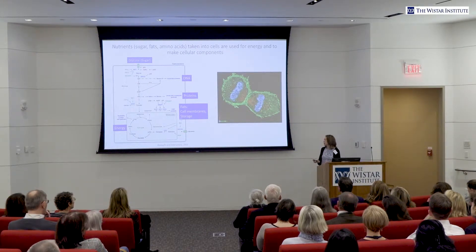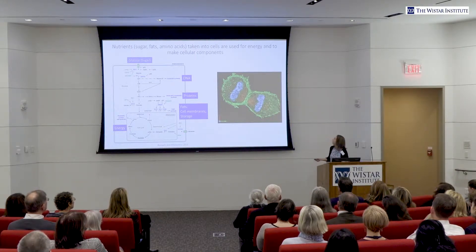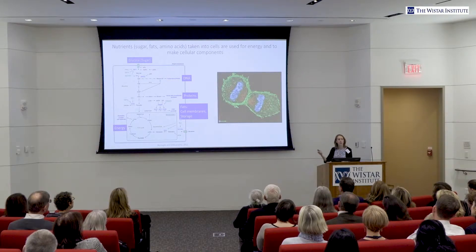This also happens in tumors. The growth of a tumor depends on the cancer cells growing and dividing to make two daughter cells. You can pretty clearly visualize it here as one cell becomes two. You need to be able to duplicate the DNA. You need to be able to copy and make different proteins that will be present in both of the cells. And then you also need to make membranes so that each cell has its own membrane. So nutrient metabolism underlies all of this.